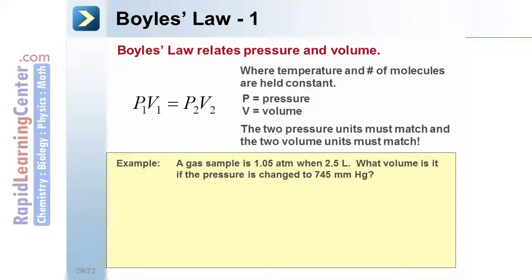A gas sample is 1.05 atm when it's 2.5 liters. What volume is it if the pressure is changed to 745 millimeters of mercury? We're given our P1 and our V1. We're given our P2 and asked to solve for V2. Notice that the pressure units do not match.